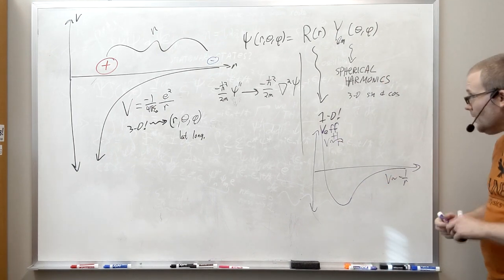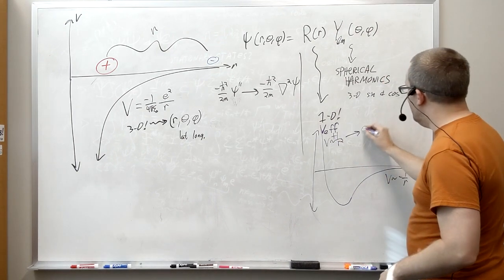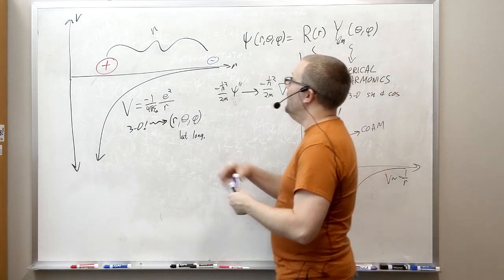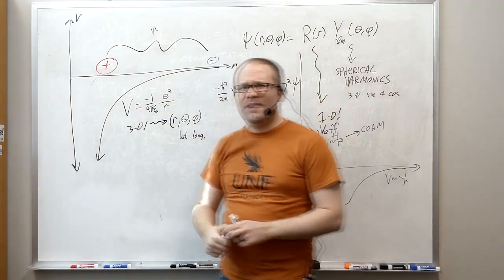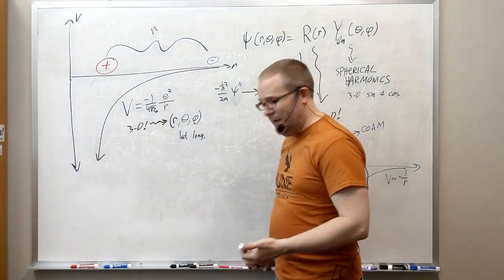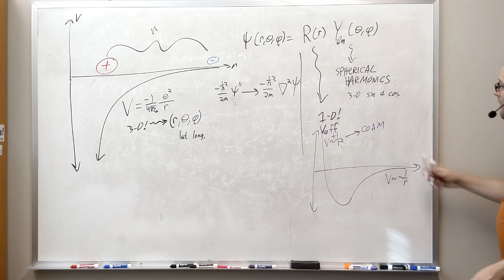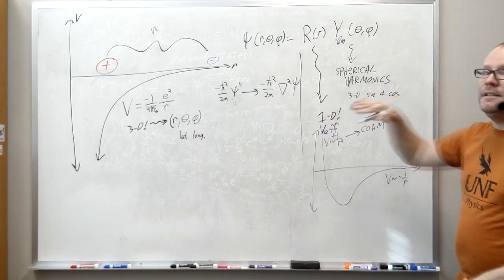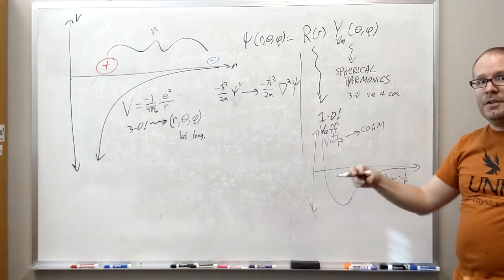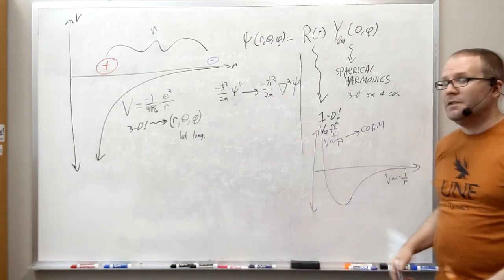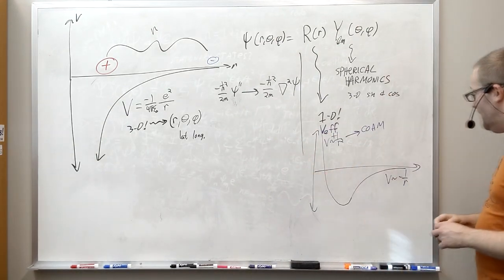What this does, this takes into account the conservation of angular momentum. Because electrons don't just fall into the nucleus - if that were the case, we wouldn't have any matter and we wouldn't be having this conversation. But because of conservation of angular momentum, because it is spinning around the proton, it actually gets flung outward by conservation of angular momentum, keeping it in a stable orbit.